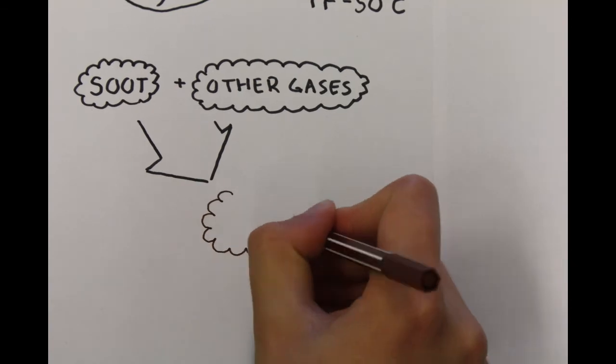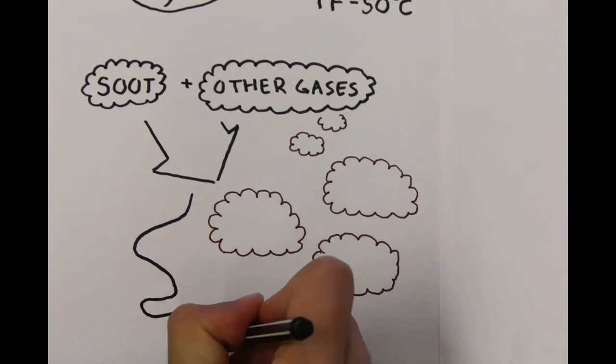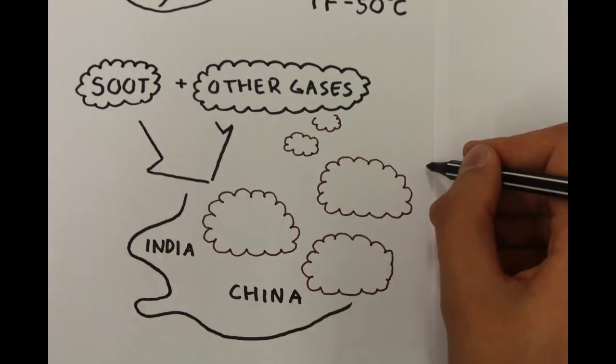Scientists have found five so-called hotspots for brown clouds, of which three are located in Southeast Asia. Some of the clouds have a thickness of up to three kilometers.